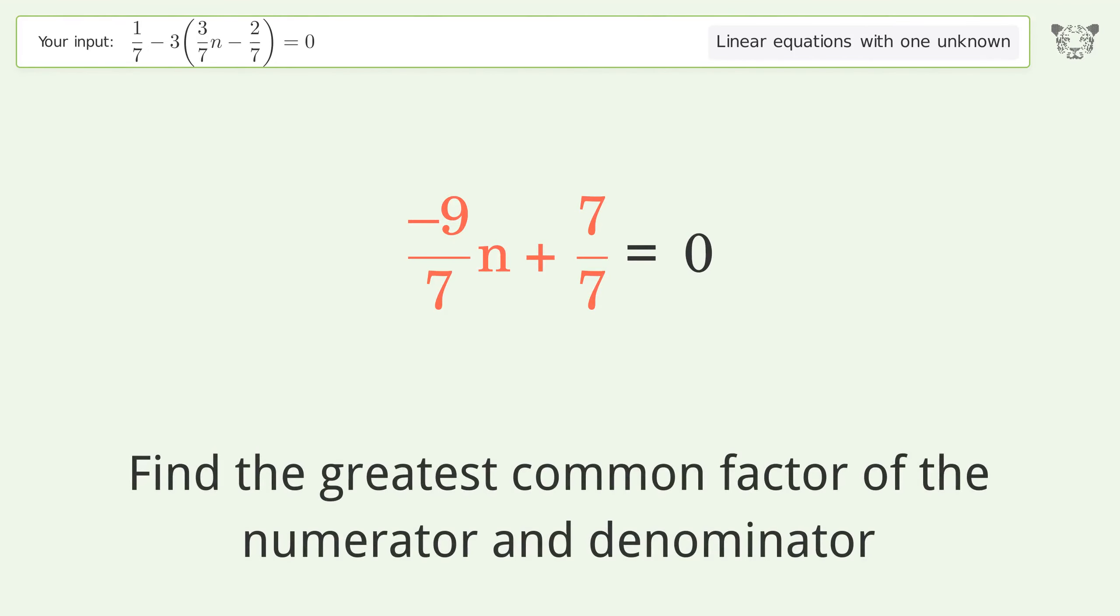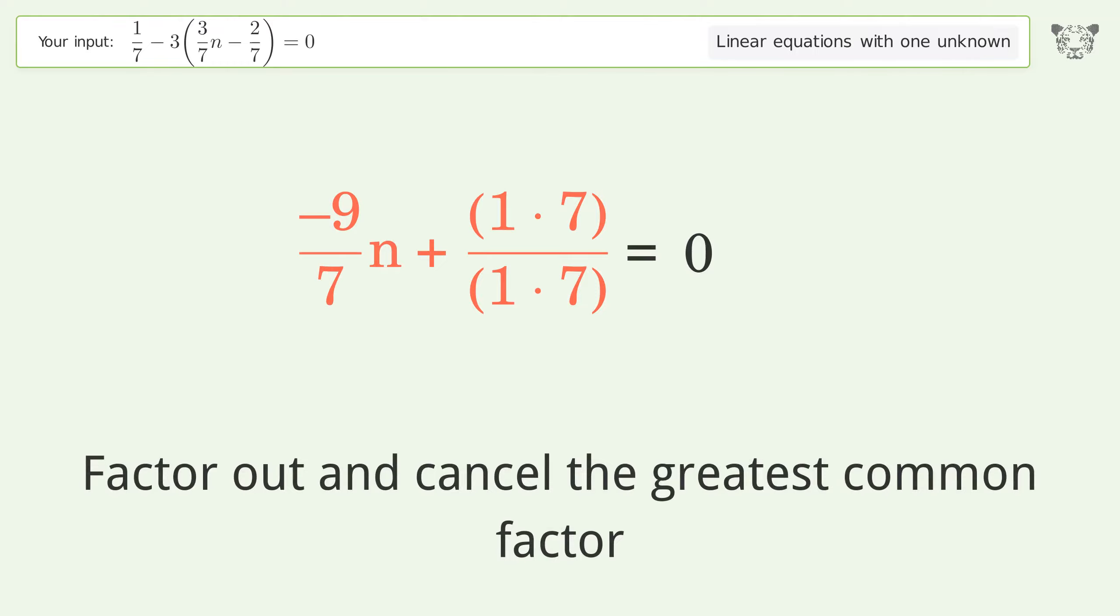Combine the numerators. Find the greatest common factor of the numerator and denominator. Factor out and cancel the greatest common factor.